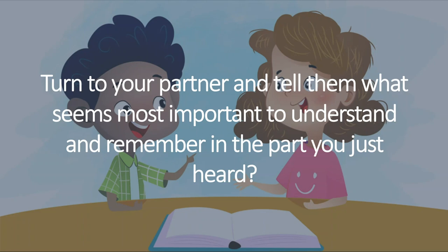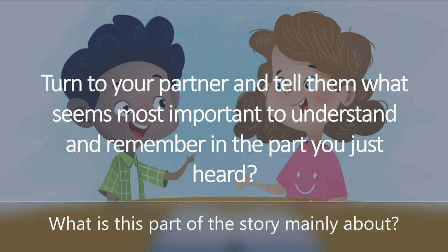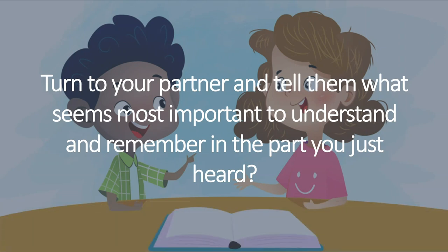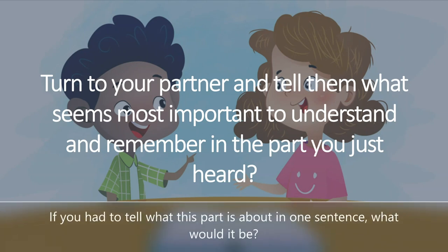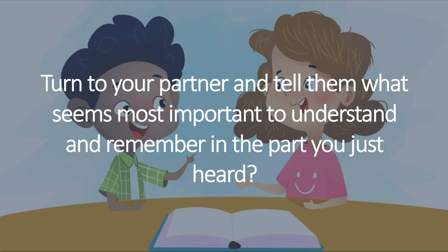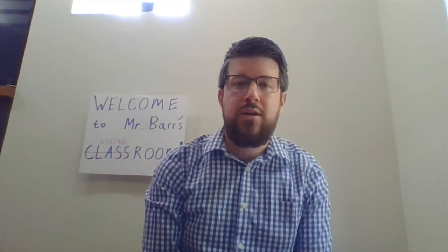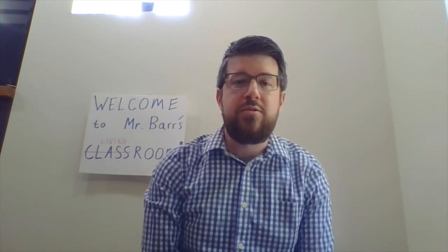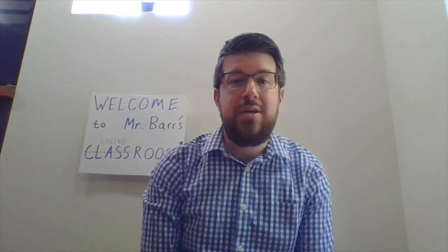If you don't know what to say, you can ask yourself: What is this part of the story mainly about? You could also answer the question: If you had to tell what this part is about in one sentence, what would it be? Before you write down your important idea, we're going to re-read this passage — because good readers always re-read to find information that they missed the first time around.